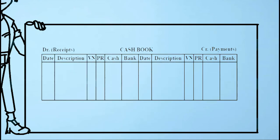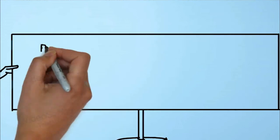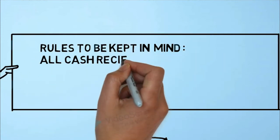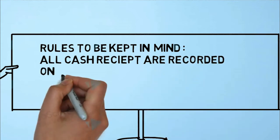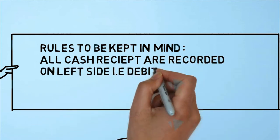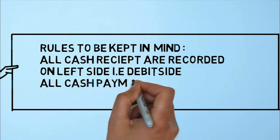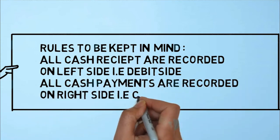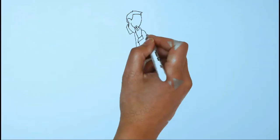The double column cash book has two sides, debit and credit, and the columns are: date, particulars, V/N, L/F, cash, and bank. Four points to be kept in mind while preparing a cash book of any type: Rule number one, all cash receipts are recorded on the left side, that is debit side. Rule number two, all cash payments are recorded on the right side, that is credit side.